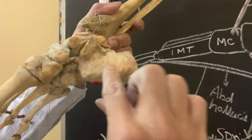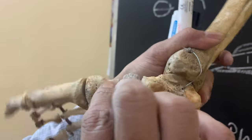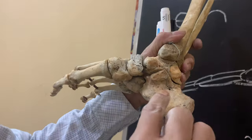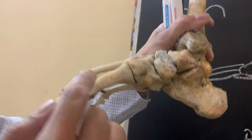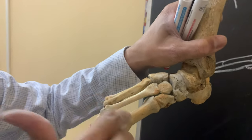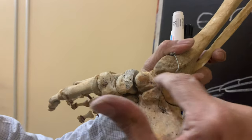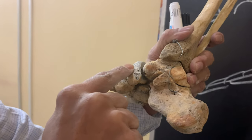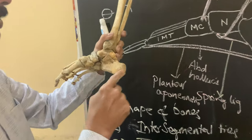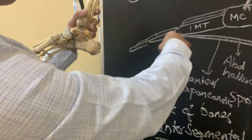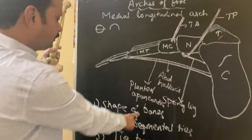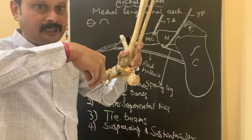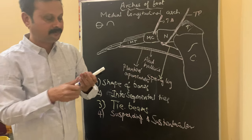On the skeleton: the posterior pillar is formed by the medial tubercle of the calcaneum; the anterior pillar is formed by the heads of the first, second, and third metatarsal bones. The summit is formed by the trochlear upper surface of the talus. The vulnerable point is the head of the talus, between the calcaneum and the navicular bone. Maintenance: shape of the bones — typical wedge shape; intersegmental ties — the spring ligament; tie beams — the muscles; suspending from above is tibialis anterior; sustentacular action from below is tibialis posterior.